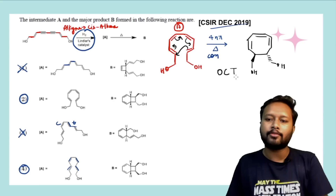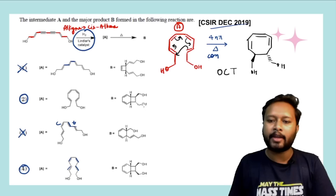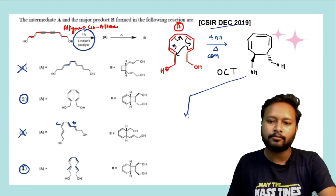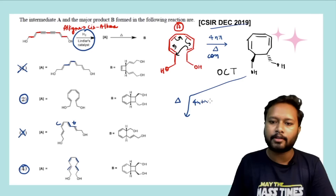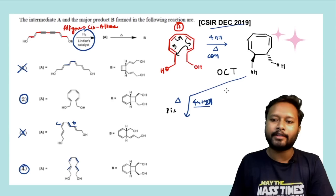In the next system, you again heat this because the product shows a second pericyclic reaction has been performed. You are going to heat this system once again. Now your system is a 4n+2π system. Since the system is 4n+2π and you are heating it, the rotation you will get is disrotation.